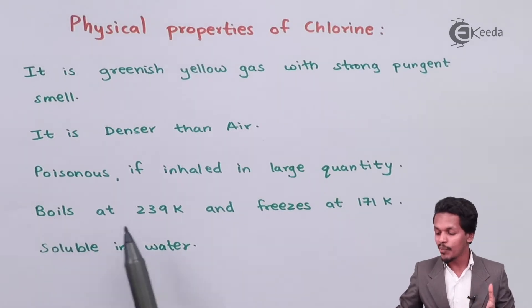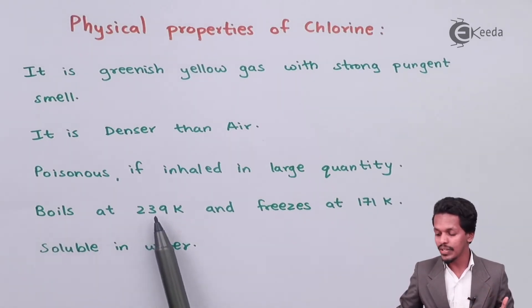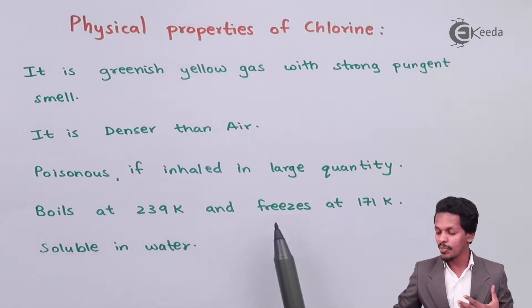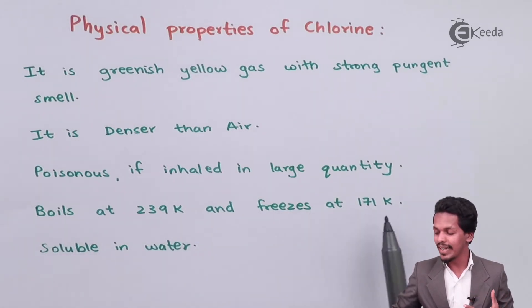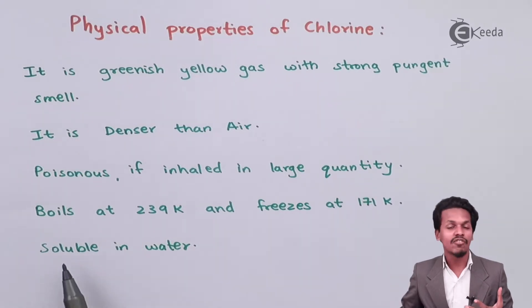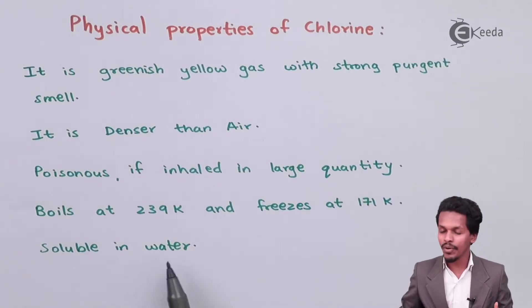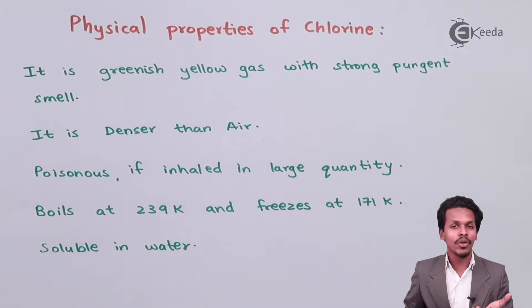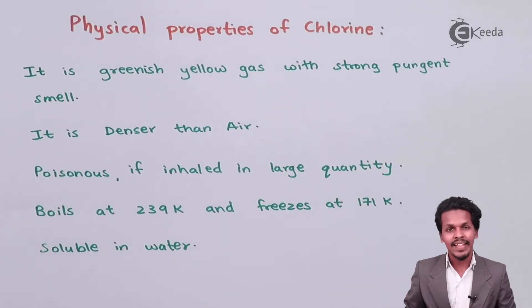The boiling point of chlorine is 239 Kelvin and its freezing point is 171 Kelvin. Chlorine is very soluble in water and also very soluble in CCl4.